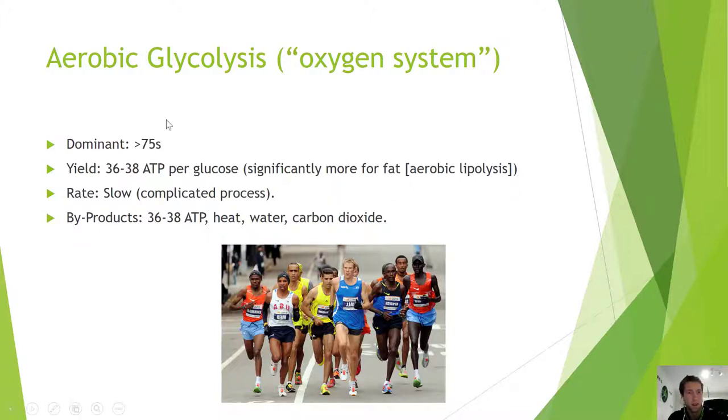Our yield is quite big - we get 36 to 38 ATP. That's a lot more than the previous two systems. It's 18 times more energy than that anaerobic system. We even get more for fat which is called aerobic lipolysis. The rate's slow - the process has to undergo the Krebs cycle and electron transport stage. All you need to know is that it is a slow process, which is why we can't sprint forever. The aerobic system is very much a submaximal system.